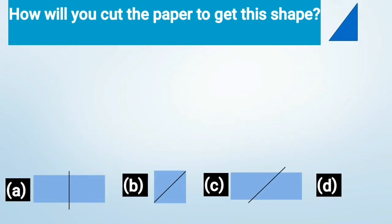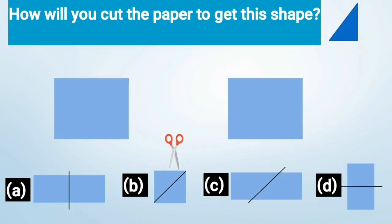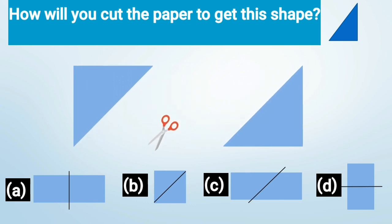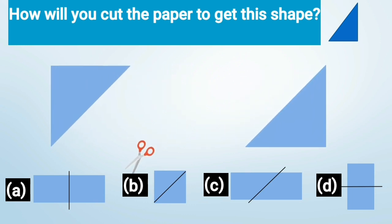Now, we are given 4 options here and we have to choose the right option. Let's cut the paper along the given directions in option A. On cutting, we get the shape with 4 vertices. Yes, here the shape has 4 vertices. Now, in option B, we will cut along the given directions. And on cutting from the given line, we get the required shape. It has 3 vertices. And we have to choose the shape with 3 vertices. So, option B is the correct option here and we will put a tick mark here.